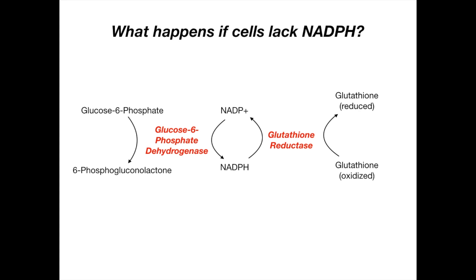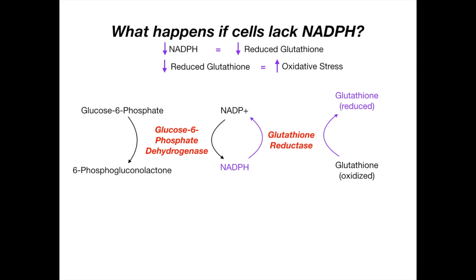What happens if cells lack NADPH—that is, what if this wheel stops spinning because an input is missing? If you don't have NADPH, you get a decrease in reduced glutathione, because glutathione reductase can only reduce glutathione by converting NADPH to NADP+. A decrease in NADPH means a decrease in reduced glutathione, and of course a decrease in reduced glutathione means an increase in oxidative stress. When free radicals go unchecked and there's increased oxidative damage, disease will occur.